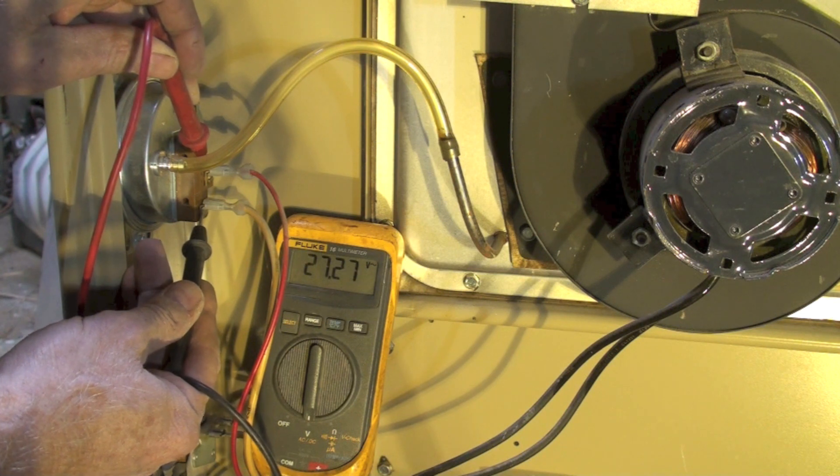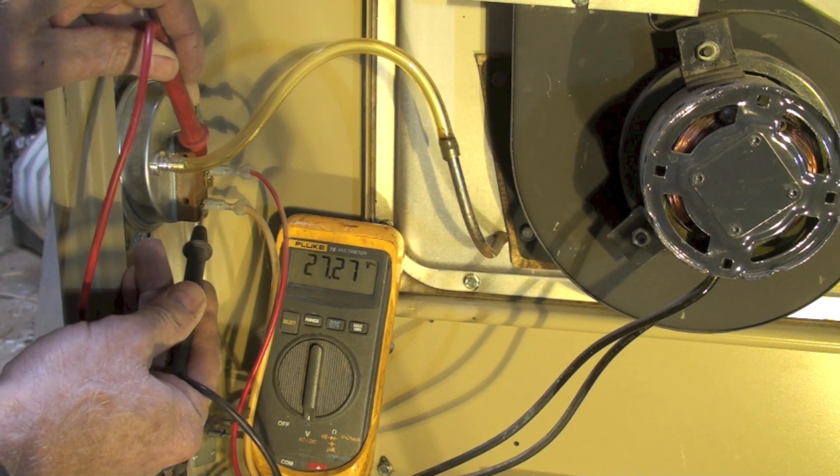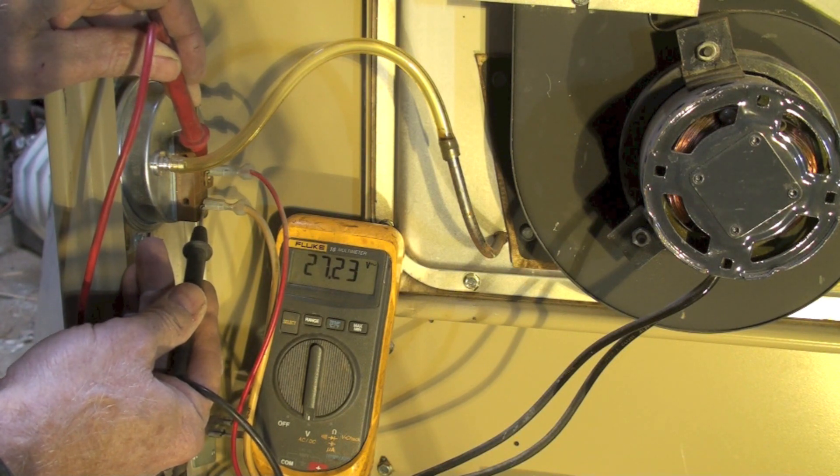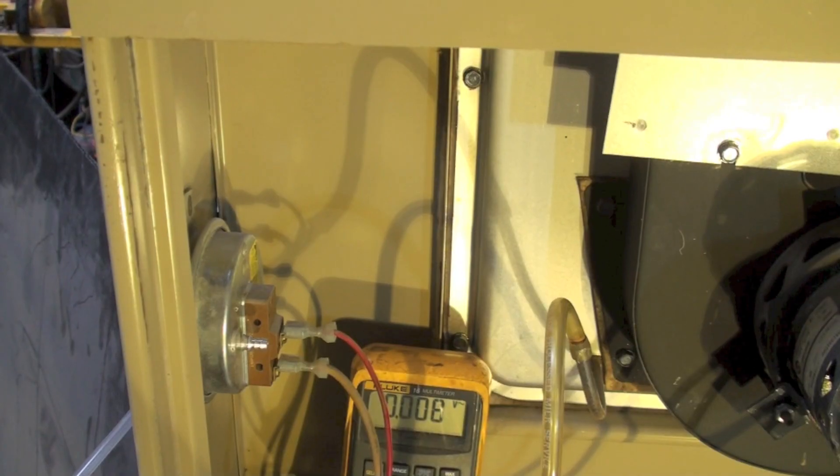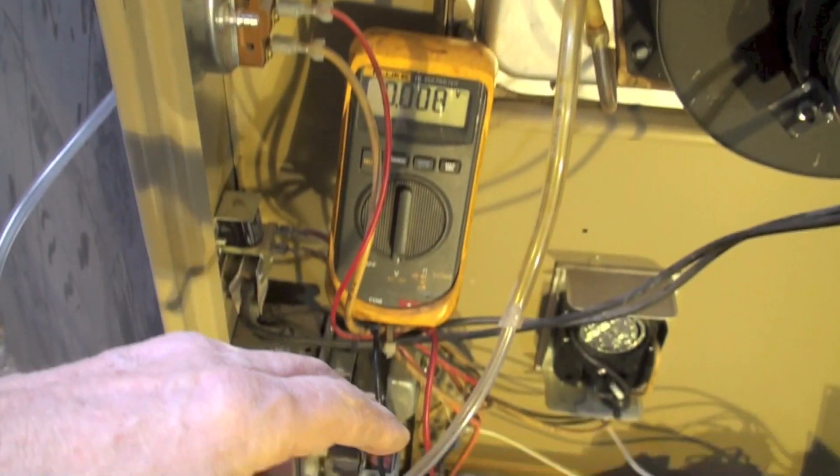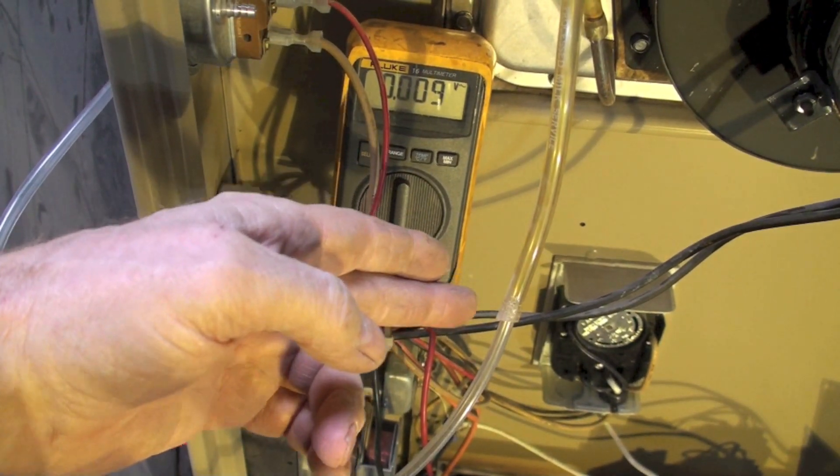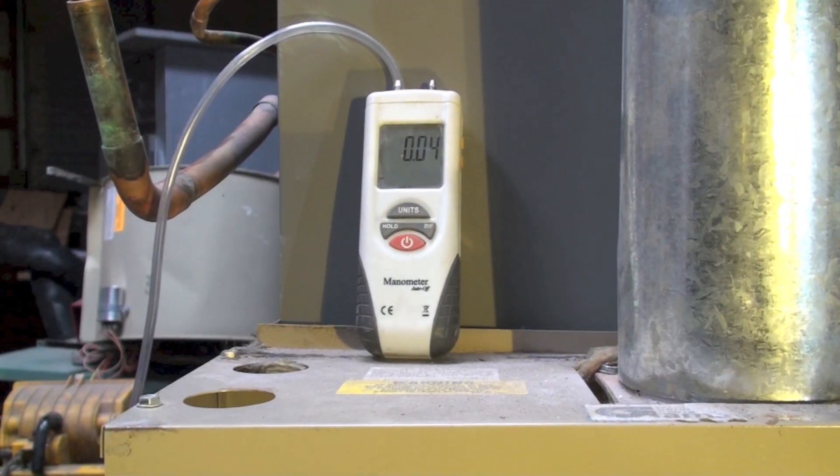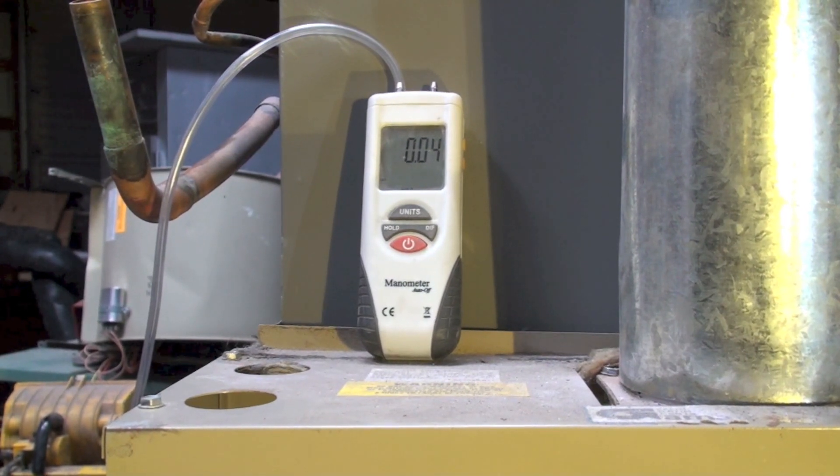Do I replace the pressure switch? Let's find out if we actually have any vacuum. What I've done is I've taken a manometer, hooked it onto this hose going to the inducer, and I'm showing virtually nothing.